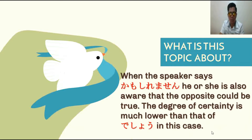And the degree of uncertainty is much lower than Desho in this case. Ibig sabihin, kung naalala ninyo yung Desho — na ibig sabihin ay probably din — compared to Desho, si Kamo Shirimasen ay yung degree ng certainty niya ay much lower. Yung percentage sa posibleng mangyari ay maliit.